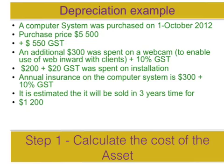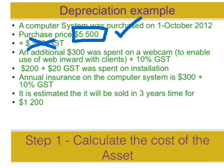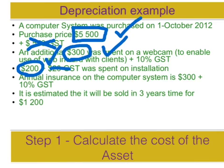The first thing we need to establish is the cost of the asset. The $5,500 purchase price forms part of the economic benefit, so that's included. The $550 GST on the purchase is excluded — it doesn't provide an economic benefit and will offset the GST we collect on sales. The $300 spent on the webcam is a necessary modification, so it provides part of the economic benefit — included. The $200 spent on installation is a necessary cost in getting the asset into a condition ready for use, so that's included. The GST on those two costs is excluded as it will offset GST collected on sales.